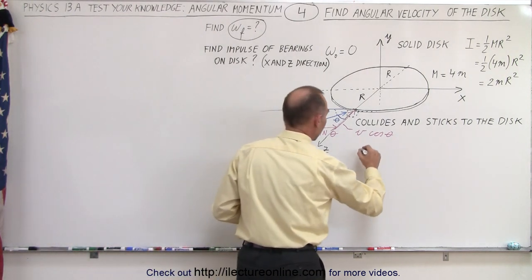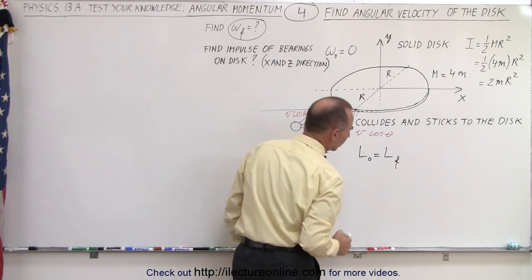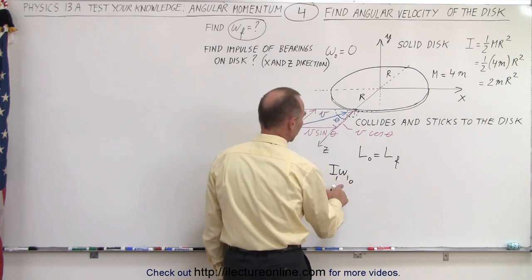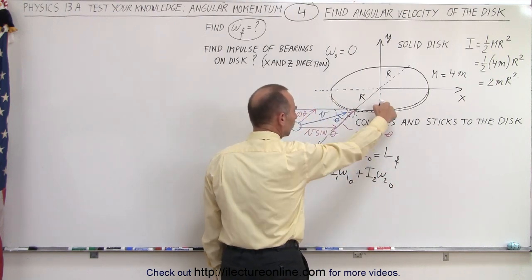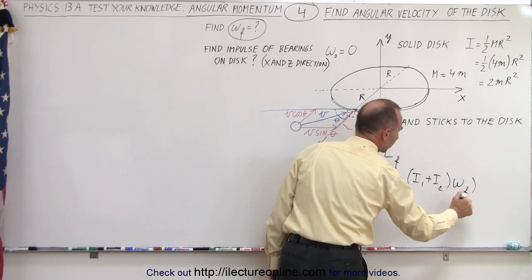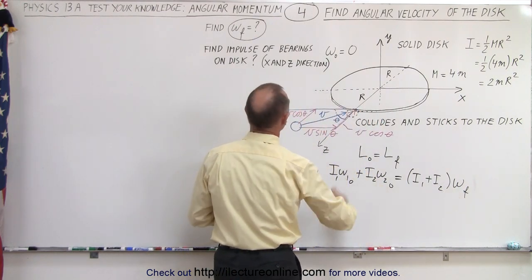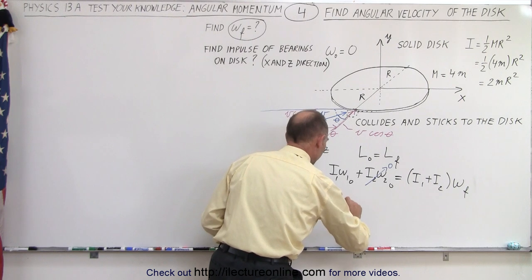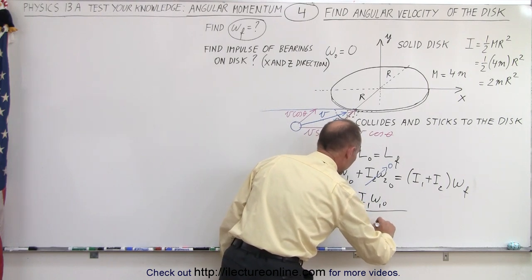So again, we're going to start with the same concept that L-initial equals L-final, meaning the angular momentum initial equals the angular momentum final. The angular momentum is going to be I₁ω₁ initial — that would be the ball — plus I₂ω₂ initial — that would be the disk — and that equals (I₁ + I₂) times omega-final. Since the disk starts with initial omega equal to zero, we can set that equal to zero, which means omega-final equals I₁ω₁ initial divided by I₁ plus I₂.